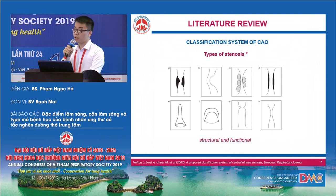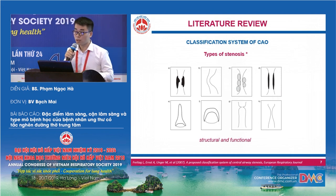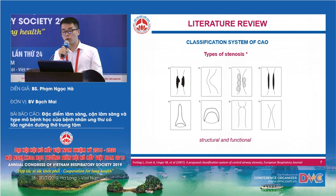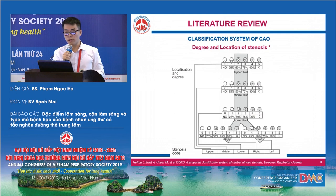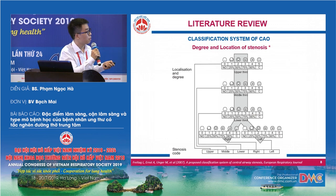After identification of CAO, it is really necessary to categorize it to determine appropriate treatment modalities for the patient. According to the European Respiratory Journal, there are two major groups of stenosis: structural and functional. The degree of stenosis is assigned a code from zero to five, which can be applied to any airway site. There are five locations within the central airway: upper third, middle third, lower third, and right and left bronchus.